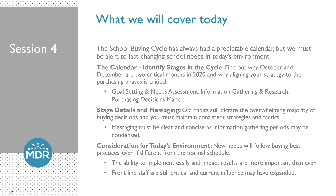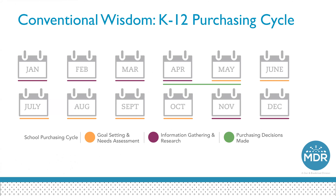What we're going to cover: the calendar, the stages, messaging and details in the staging, and some considerations for today's environment. The calendar is broken into three sections: goal setting and needs assessment (May through October), information gathering and research (November through April), and the all-important purchasing decisions in April and May. We'll cover how some of those are different now, but how largely they're remaining the same.